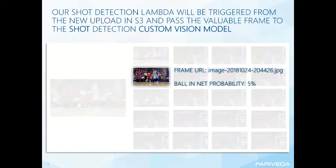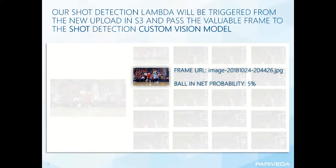Once our object detection Lambda uploads to S3, our shot detection Lambda is triggered from that new upload, and it passes the valuable frame to a second Custom Vision model, which determines whether or not a shot was made. We get one prediction out: ball-in-net probability. The reason we chose two separate lambdas and two separate models was to keep things as modular as possible — for example, in a future state we'd want to detect whether a player is part of team A or team B.